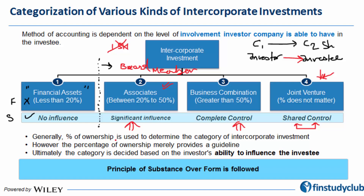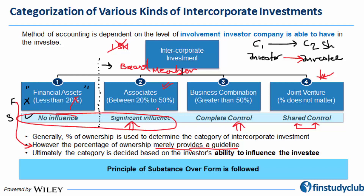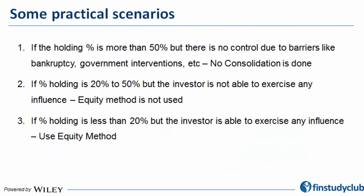Three key points to pay attention to. Generally, the percentage of ownership is used to determine the category of inter-corporate investment. However, percentage of ownership merely provides a guideline — it is the legal form part. The accounting method to be followed is determined by how much control or influence the investor company is actually able to exercise — that is the deciding factor.